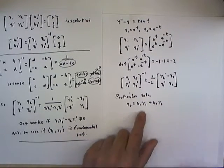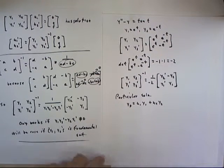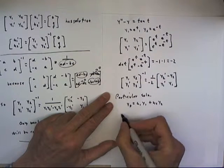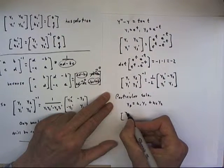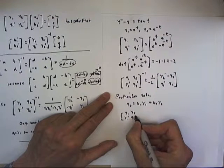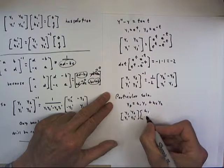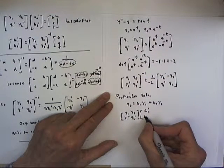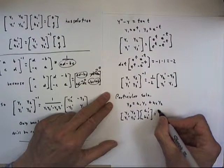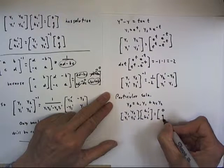I'm debating whether to write the matrix equation down or just write the result. Okay, sorry for that little delay but I've decided. Our matrix equation is y1, y2, y1 prime, y2 prime times the vector u1 prime, u2 prime equals 0, g.